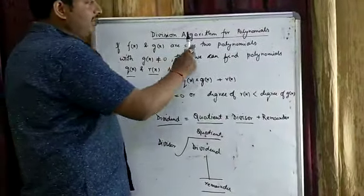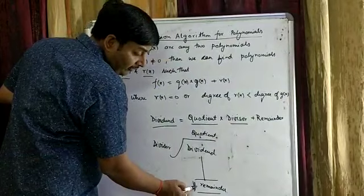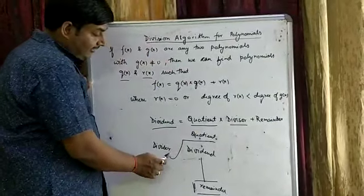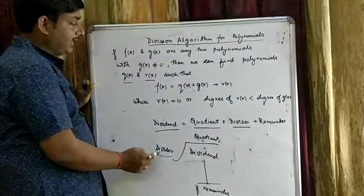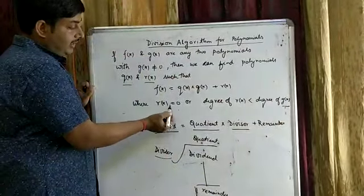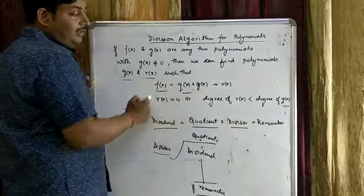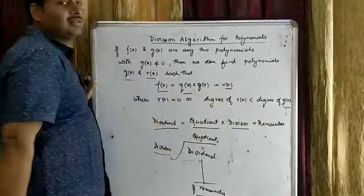This is the division algorithm of polynomial. The degree of remainder is always less than the divisor. Here, divisor is g(x). Dividend is f(x). Quotient is q(x). And remainder is r(x).